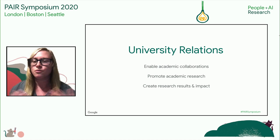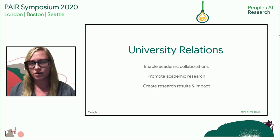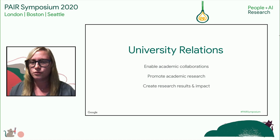What we do: we help enable academic collaborations for Google Research, manage and support the interface between academic research and research across Google, promote and support academic research in Google's areas of interest, and support the next generation of researchers. We do this for the general good, participating in the ecosystem of academic, industry, and government to create research results and impact that would not otherwise be possible.